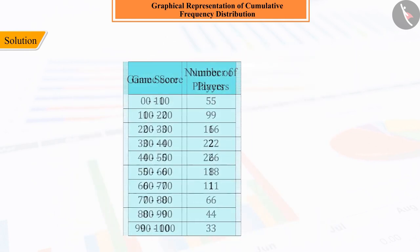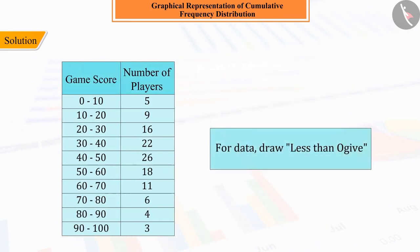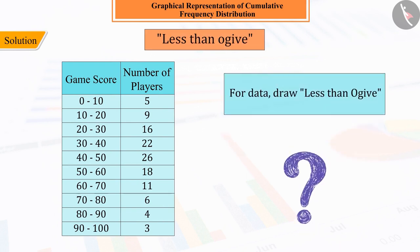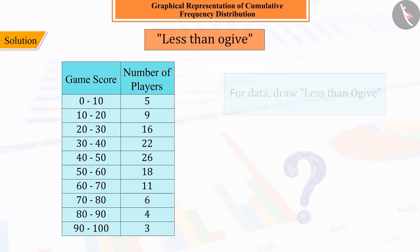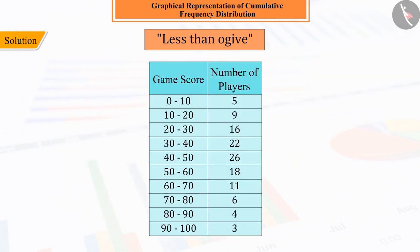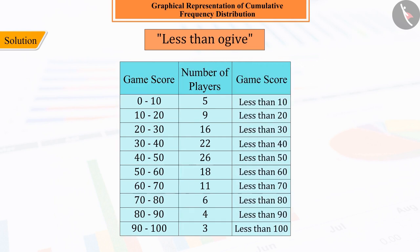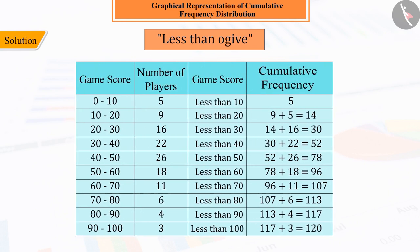If you are asked to draw a less than ogive for the above data, can you draw the ogive? For less than ogive using the given data, we will construct the cumulative frequency distribution for less than ogive, where 10 to 100 are the upper limits of the corresponding class intervals.